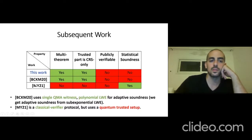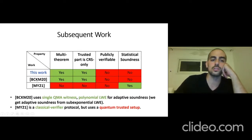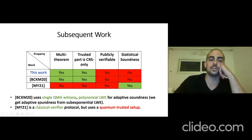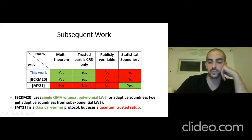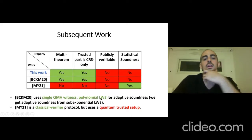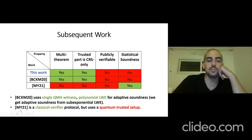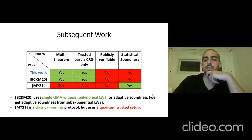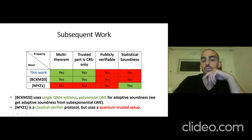Subsequent works include Bartusek, Coladangelo, Khurana, and Ma, and Morimae and Yamakawa. The BCKM work in all meaningful parameters subsumes this work. Two improvements they make: they use a single QMA witness rather than polynomially many copies of the quantum witness, and to achieve adaptive soundness they use only polynomial LWE. The MY work has a classical verifier, but it uses a very non-standard setup where quantum computation is used for the trusted setup.